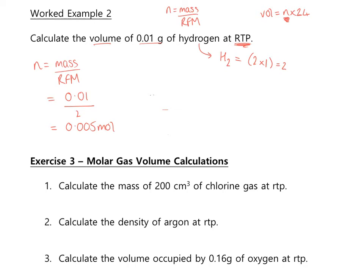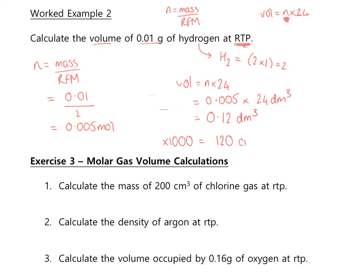Then put that into volume = n × 24. Number of moles is 0.005, molar gas volume is 24 dm³, giving volume = 0.12 dm³. You could also multiply by 1000 to get 120 cm³ — either unit is acceptable as long as it's correct.